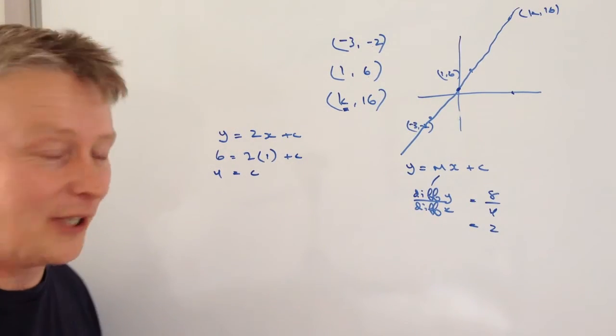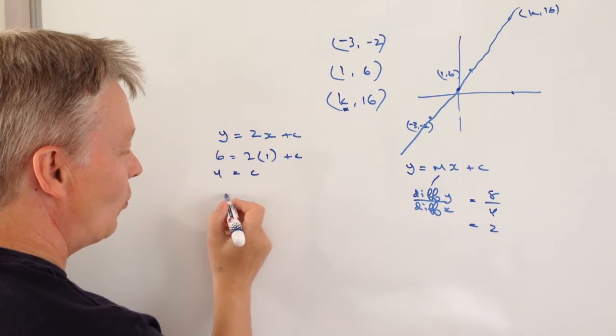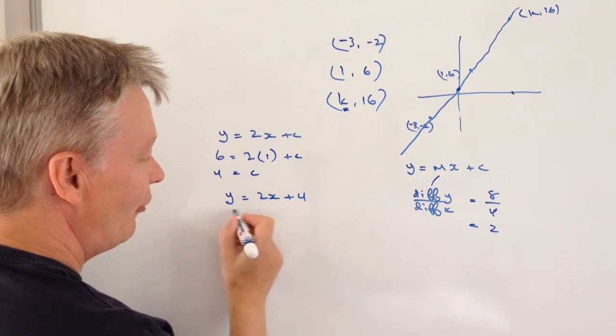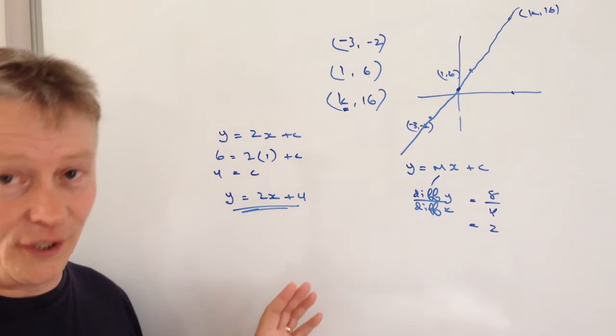Therefore, I can write the whole equation now as Y = 2X + 4, and that's the value of the equation.